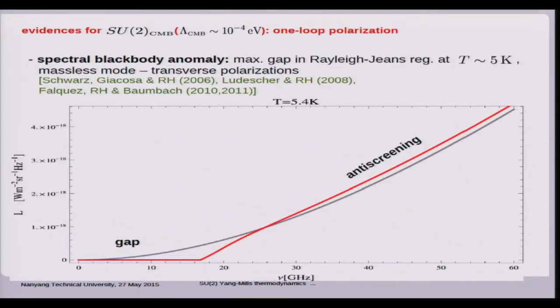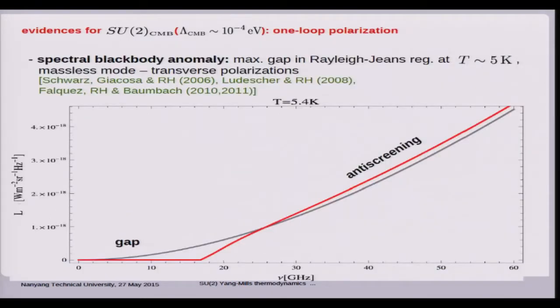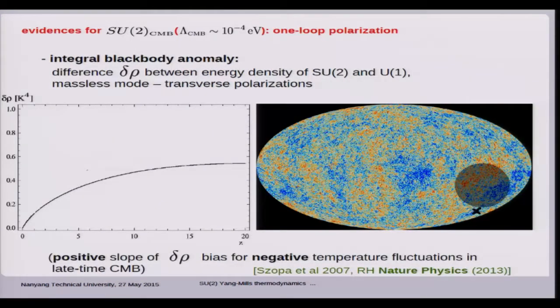There's predictions, of course. This is now a one-loop effect. You calculate the polarization tensor of the theory, and you know now what the scale of the theory is. It was 10 to the minus 4 eV just by fixing it in terms of this little bump. You say that at 5.4 Kelvin, twice the temperature of the CMB today, you get a spectral gap in the spectral distribution. Rayleigh-Jeans is a parabola. You get a gap. You get a little bit of anti-screening, which however exponentially fast approaches the Planck curve. This can be measured. Then there is an integral manifestation of the spectral anomaly, which is just the difference in energy density between SU2 and U1 standard theory, being a positively sloped quantity with slope that is very quickly decaying. There's a dedicated paper just explaining how this positive slope actually biases negative temperature fluctuations at late time.